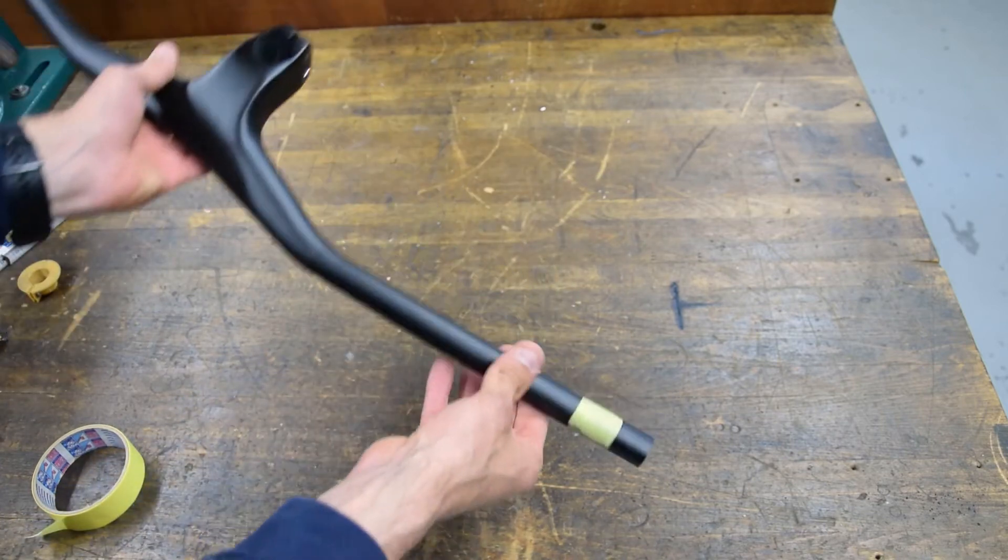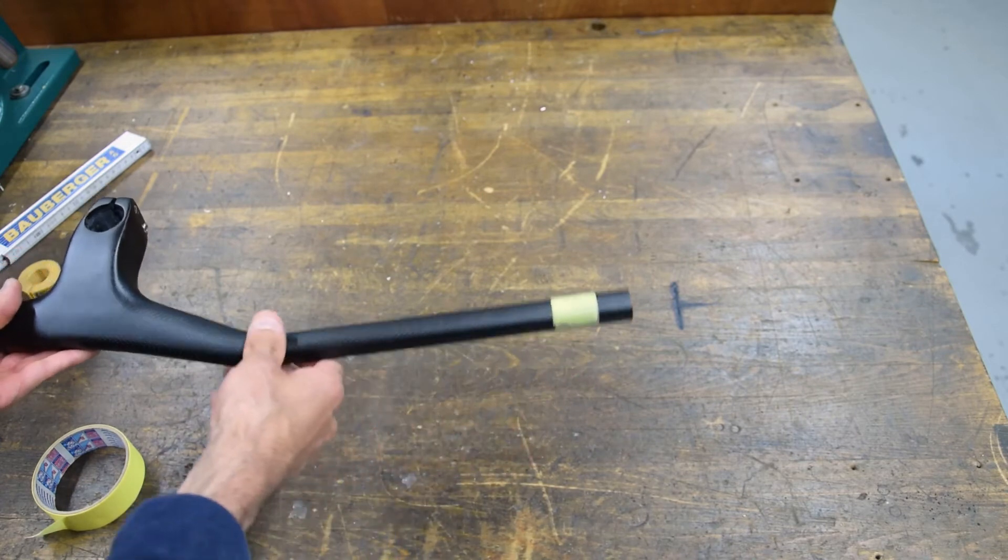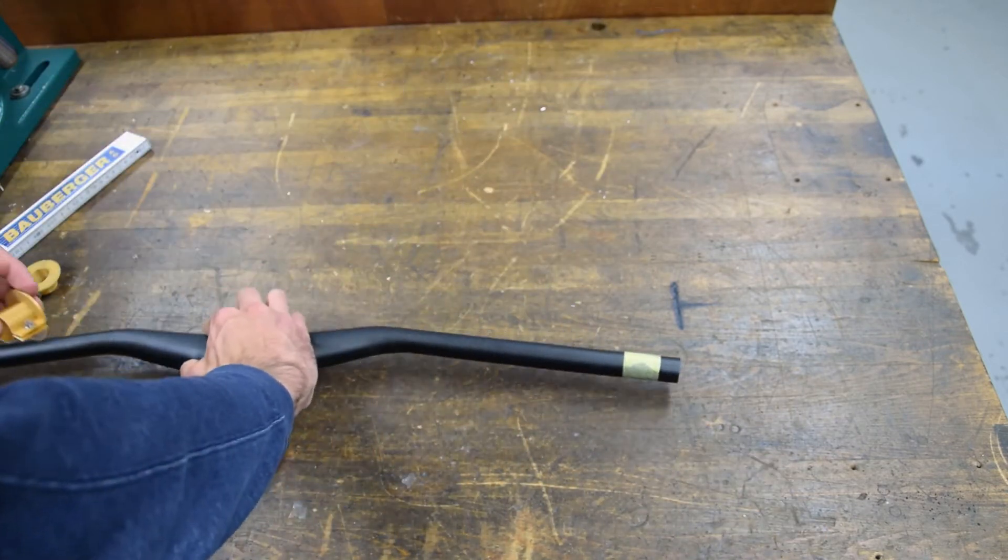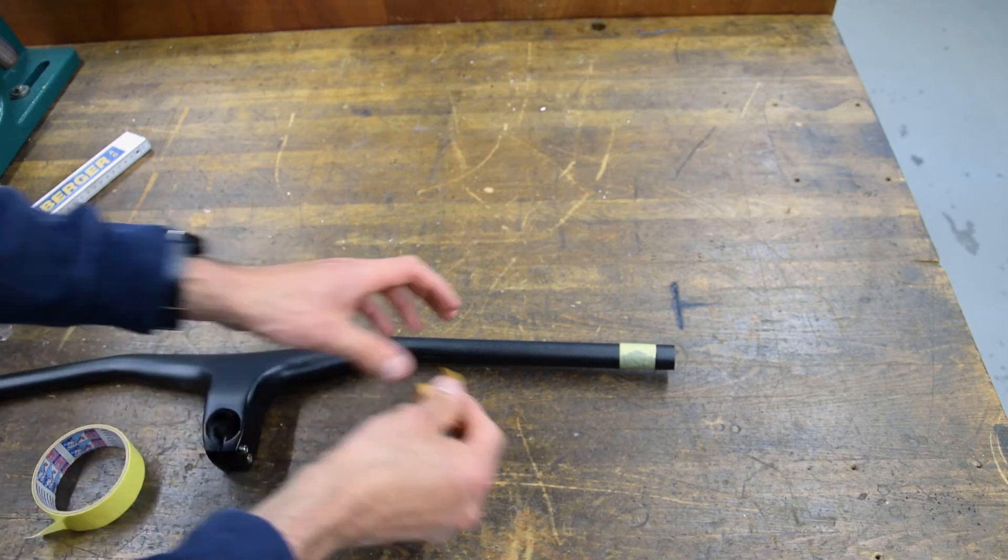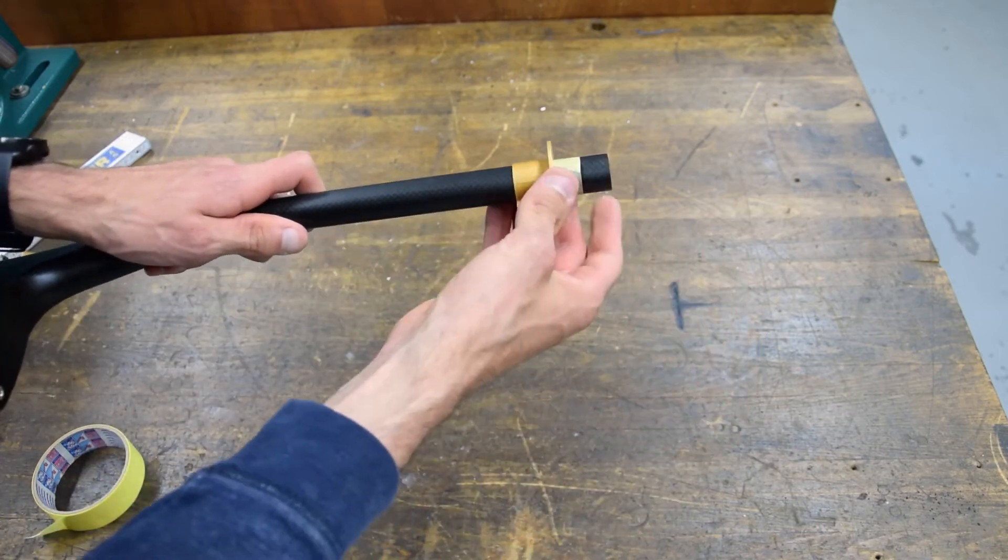So we have here a protective sheet and then on the other side as well. So let's mount now the two cutting guides. We start first with the right side.